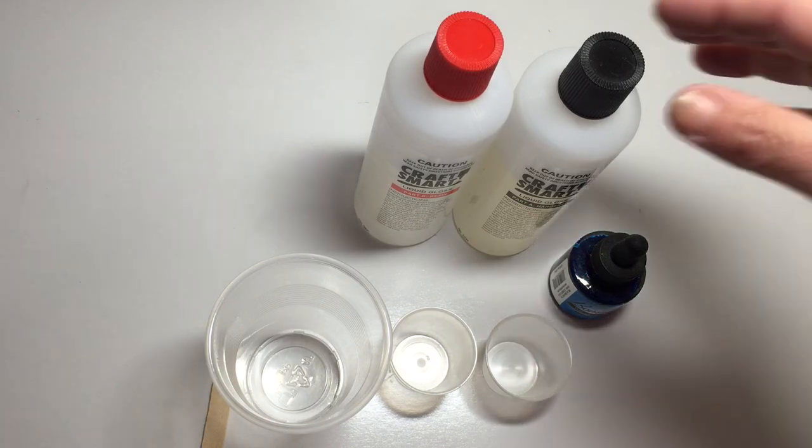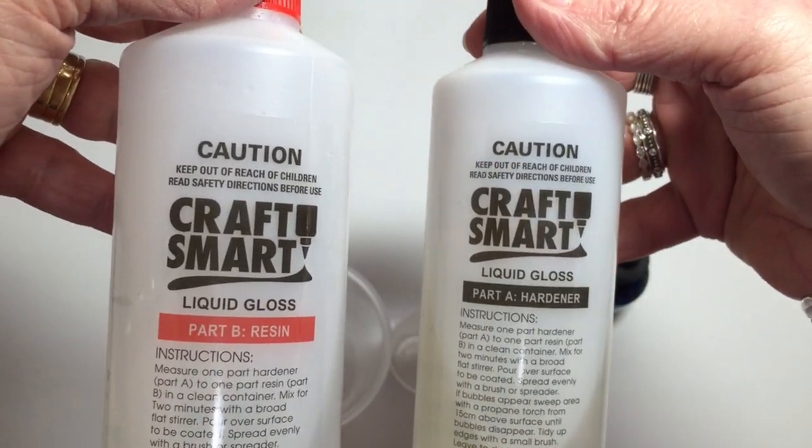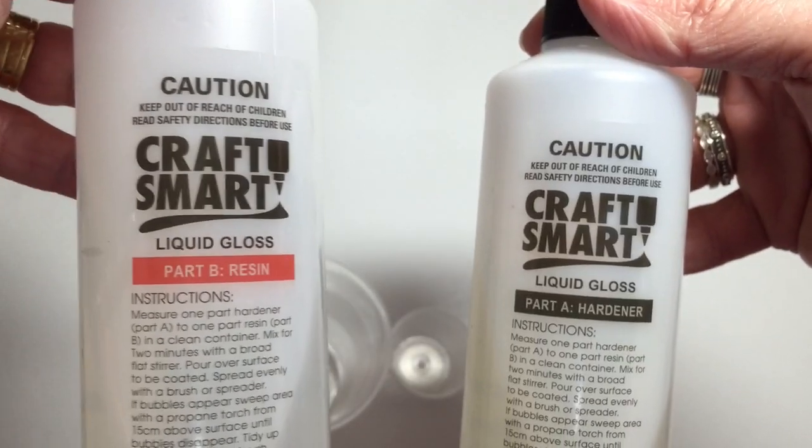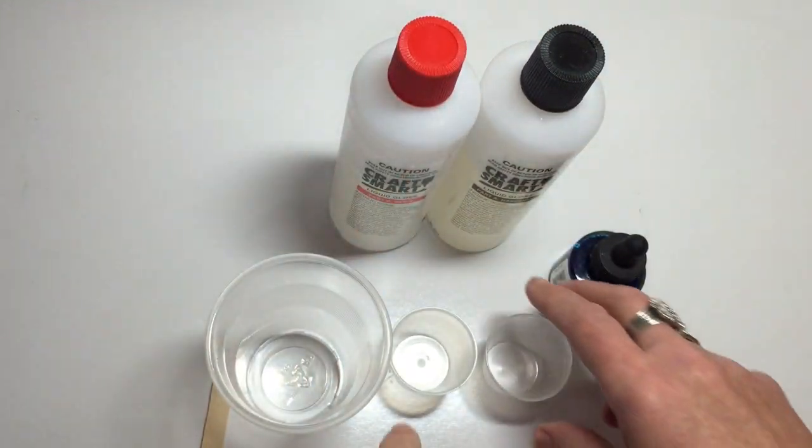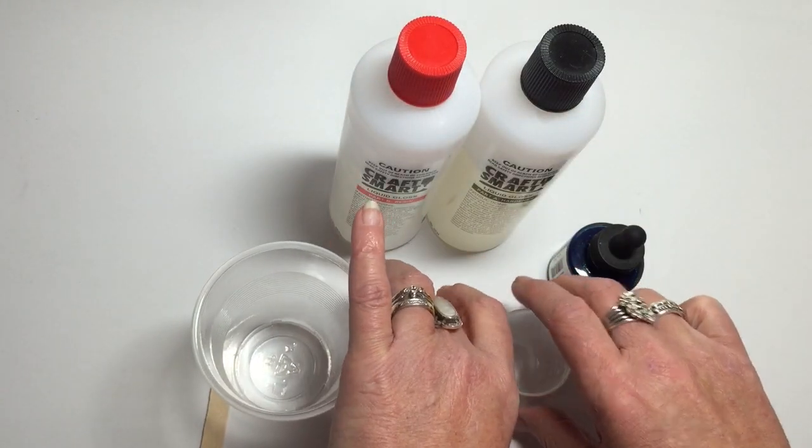The resin that I use is the Smart Craft Liquid Gloss 2-Part Epoxy Resin. We have that first part which is the hardener and the second part is the actual resin. You have to be very careful with this type of resin that you mix your parts exactly and so I used two little medicine cups for that purpose.